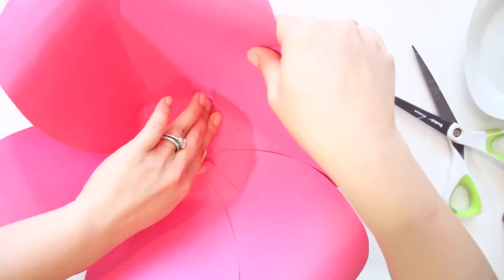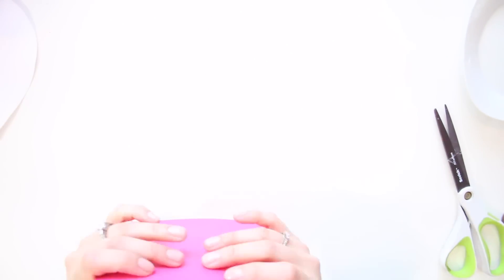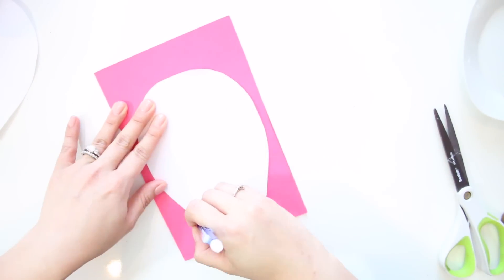Once you're done with the first outer layer of the petals, you can set it aside and start working on the medium sized petals. Take 6 more half sheets and repeat the same steps with the medium petal template.